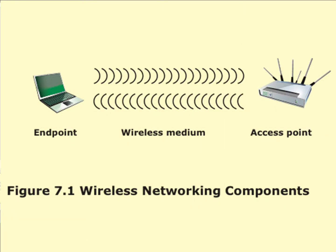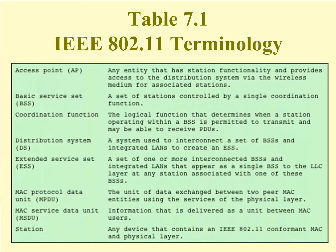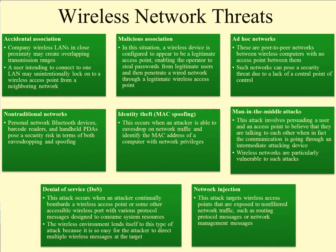Here's a basic structure of an endpoint communicating with an access point, whether that's a router or not, with some medium in the middle. Key terminology for this lecture: an access point is any entity that has station functionality and provides access to the distribution system via the wireless medium. The MAC protocol data unit is the unit of data exchange between two peer MAC entities using the services of the physical layer. The MAC service data unit is information delivered as a unit between MAC users.